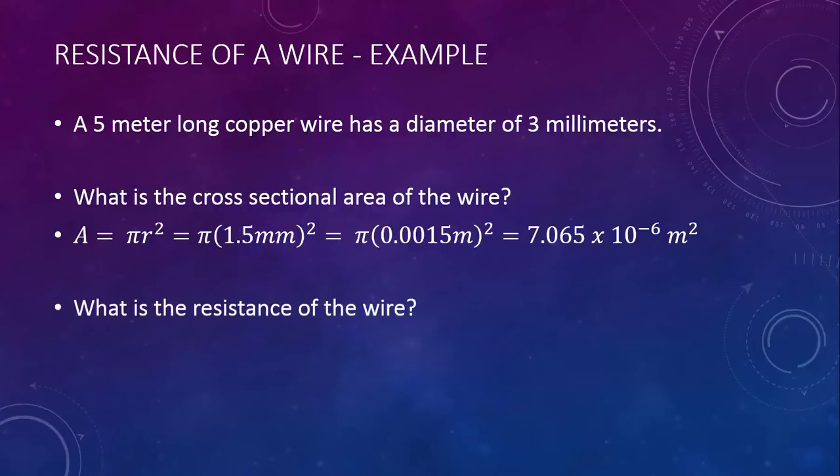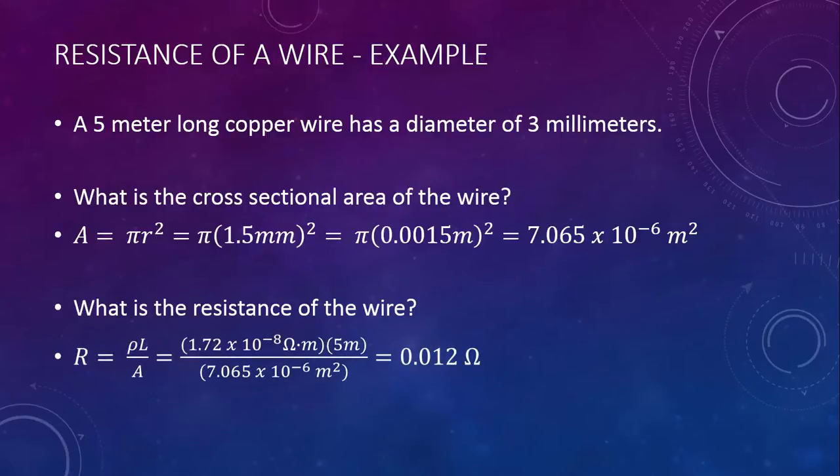Now we can determine the resistance of the wire. R equals rho L over A. We can look up the resistivity of copper on the reference table. It's 1.72 times 10 to the negative 8 ohm meters. We know that the wire is 5 meters long, and we just found out the cross-sectional area. The resistance of this wire would be 0.012 ohms.